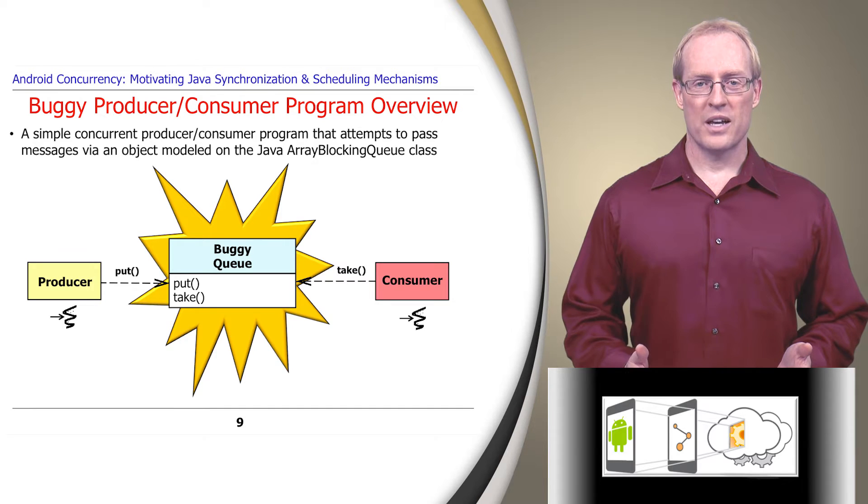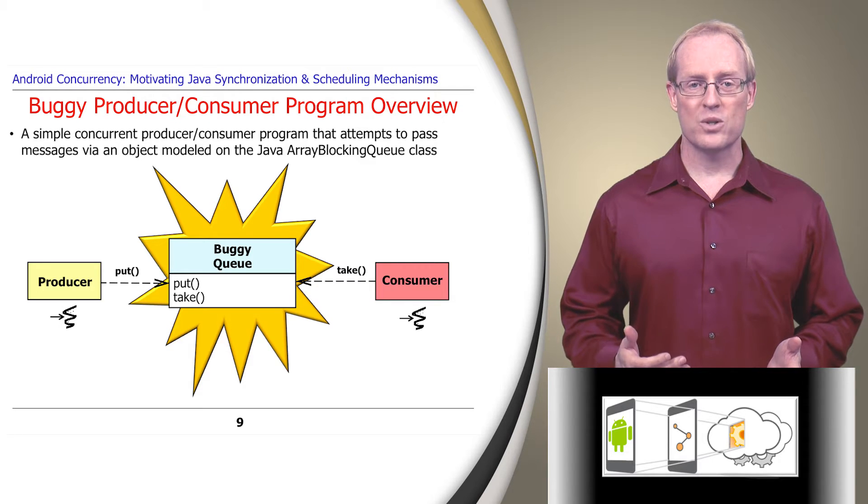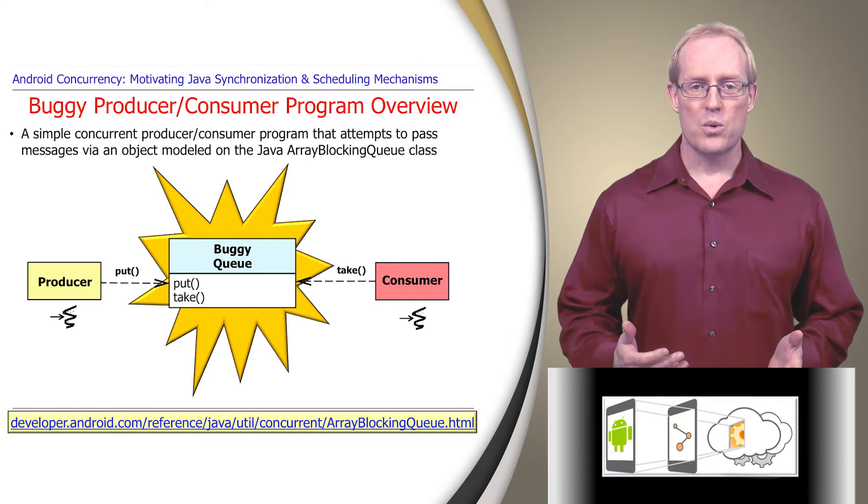Our first example is a simple concurrent producer-consumer program that attempts to pass messages via an object whose interface is modeled loosely on the Java util concurrent array blocking queue class, described in this link, whose put and take methods enqueue and dequeue elements in a synchronized manner.